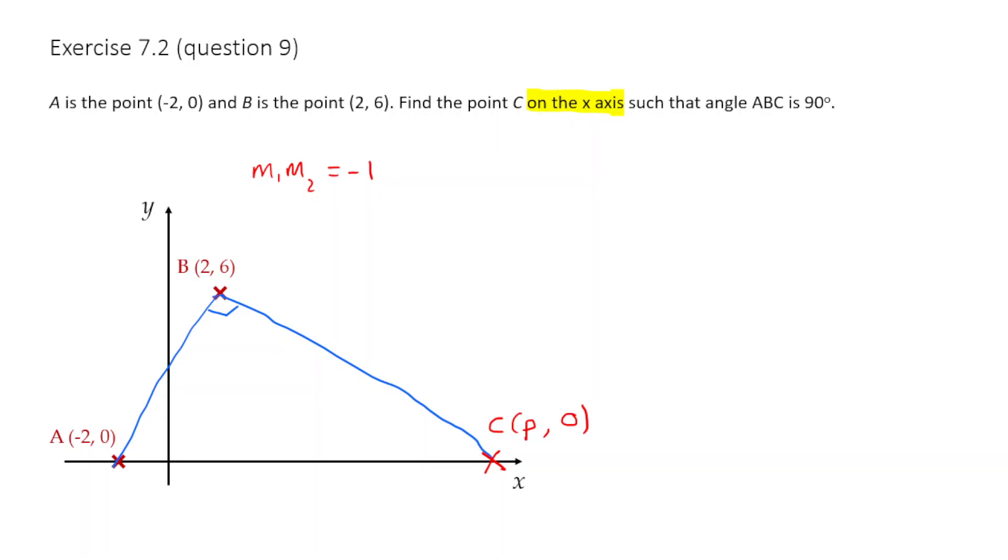So let's go about calculating those gradients. Let's do the gradient AB, so the gradient of AB here. Well, that's going to be y2 minus y1, which is 6 minus 0, divided by x2 minus x1, which is 2 minus minus 2. And that's going to be 6 divided by 4, which simplifies to give 3 upon 2. So that's the gradient AB.